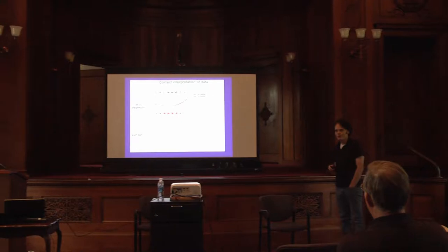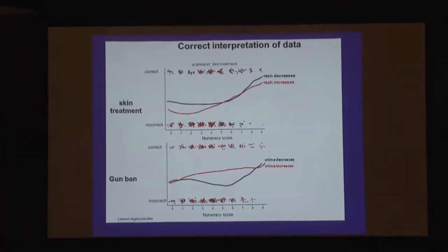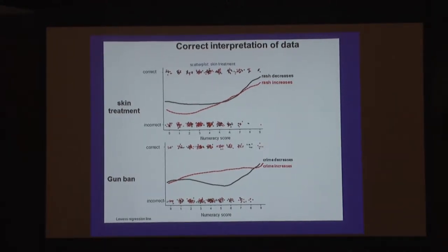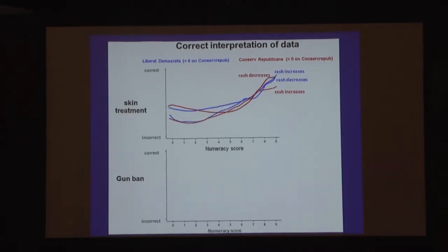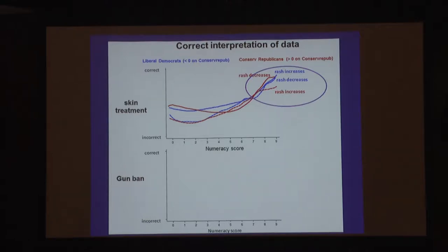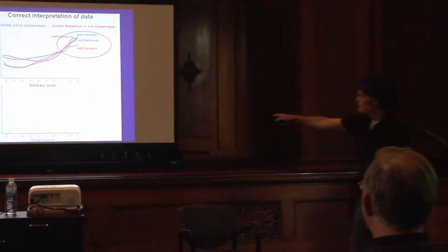I already showed you the raw data for the skin treatment version. With the gun ban, it looks a little noisier, and something is going on — partisanship. For the skin treatment subjects, they were more likely to get the answer right as numeracy increased, and it didn't matter what their political views were. This is consistent with ordinary experience, because liberals and conservatives basically both have the same kind of complexion concerns. But with the gun ban, something pretty odd is happening.